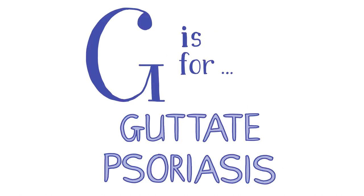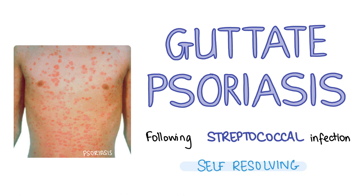G is for guttate psoriasis. Guttate psoriasis is more common in children and adolescents than adults. On examination patients will have teardrop-shaped scaly erythematous papules on the trunk and limbs. These lesions are sometimes precipitated by a streptococcal infection, usually two to four weeks before onset. Most cases resolve spontaneously within two to three months; however you can consider prescribing emollients, vitamin D analogues and topical steroids. Tonsillectomy may be necessary with recurrent episodes, as streptococcal infections tend to commonly trigger guttate psoriasis.